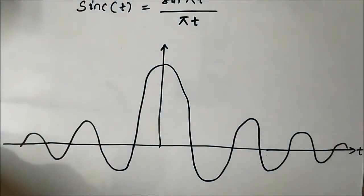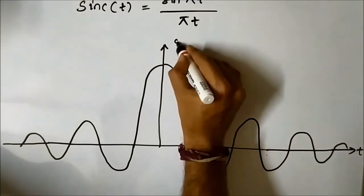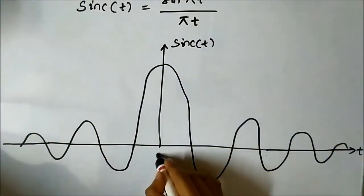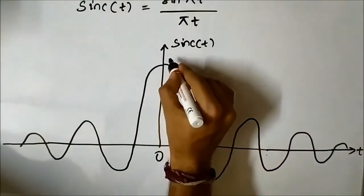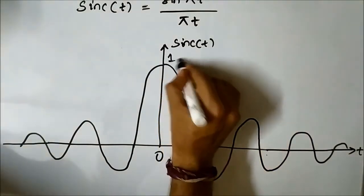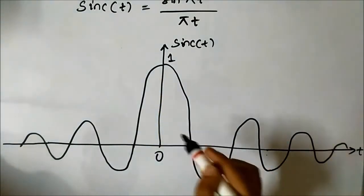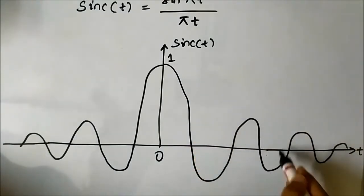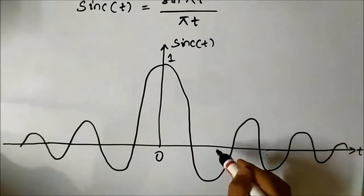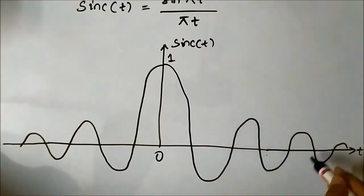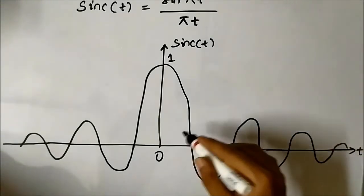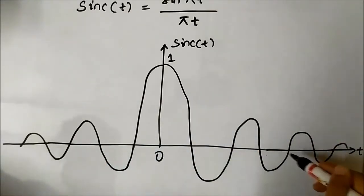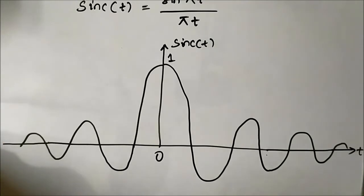This is the time axis and this is the amplitude axis. The value at t equals 0 is 1. As you can see, the magnitude of the amplitude is continuously decreasing as time progresses on both sides. The amplitude is constantly decreasing.